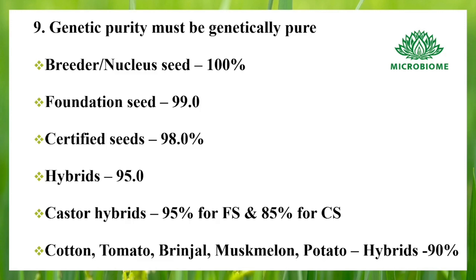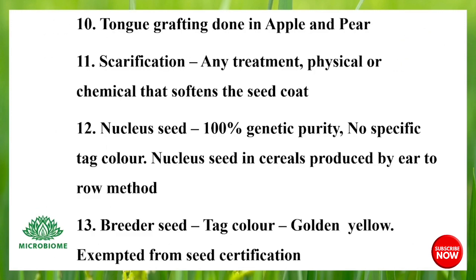Cotton, tomato, brinjal, muskmelon, and potato hybrids have 90% genetic purity. Tongue grafting is done in apple and pear. Scarification is any treatment, physical or chemical, that softens the seed coat. Nucleus seed has 100% genetic purity with no specific tag color. Nucleus seed in cereals is produced by the ear-to-row method.